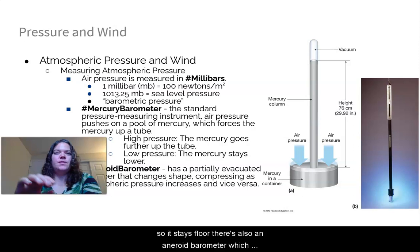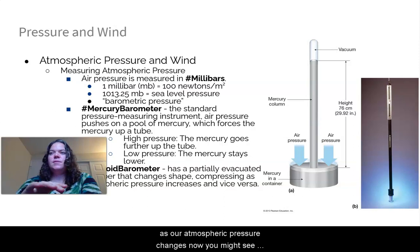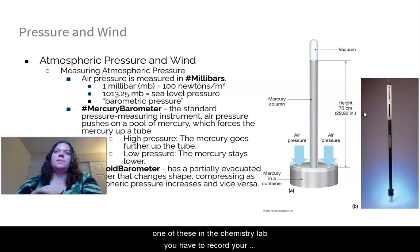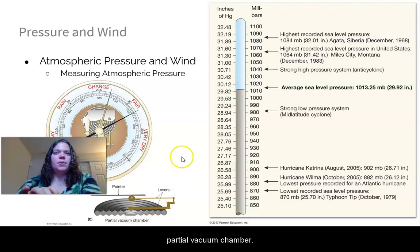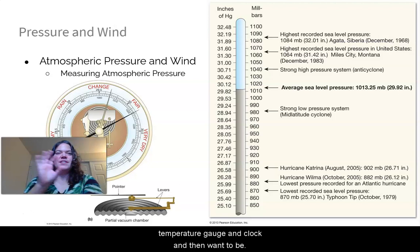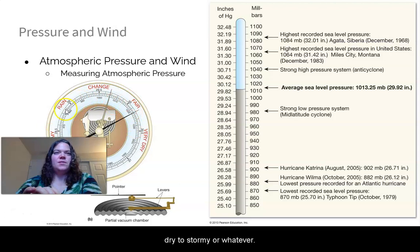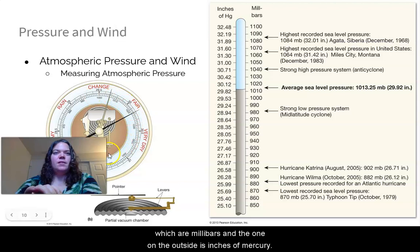There's also an aneroid barometer. It has a partially evacuated chamber that changes shape, compressing and expanding as our atmospheric pressure changes. You might see one of these in the chemistry lab. You have to record your pressure during chemistry experiments because if the pressure changes, you might get different results. So there's that aneroid barometer right there with the partial vacuum chamber. You see these in gift catalogs. You have like a temperature gauge, a clock, and then one of these. And it tells you if it's going to change from stormy to dry or dry to stormy. This one happens to have numbers on the inside, which are millibars, and the one on the outside is inches of mercury.